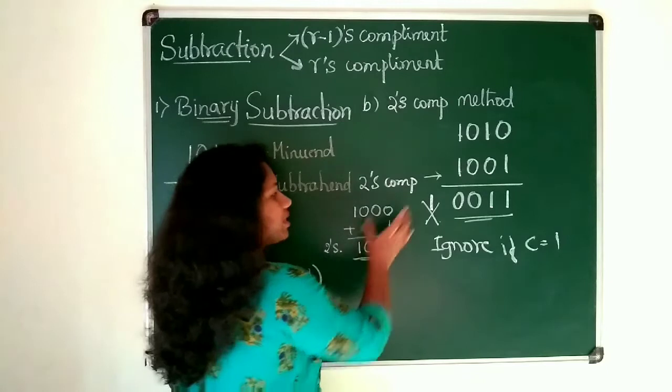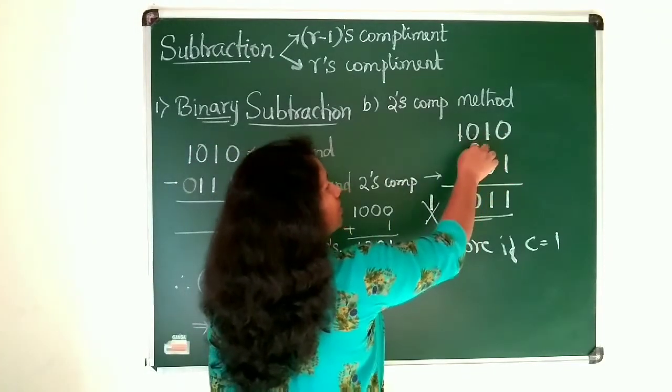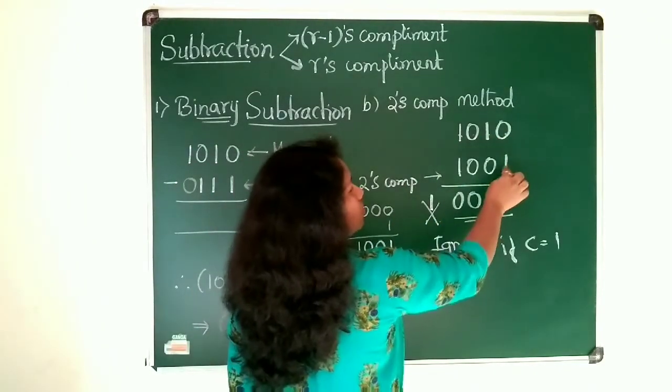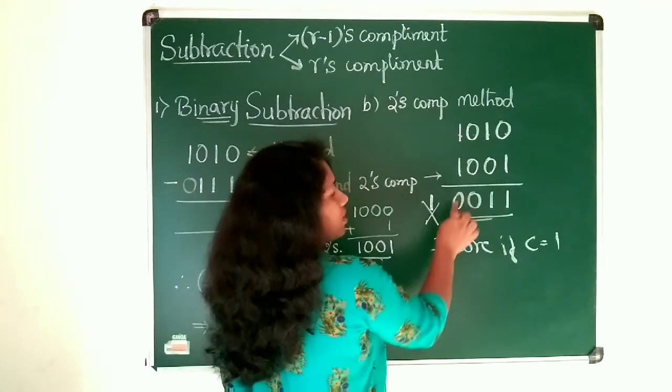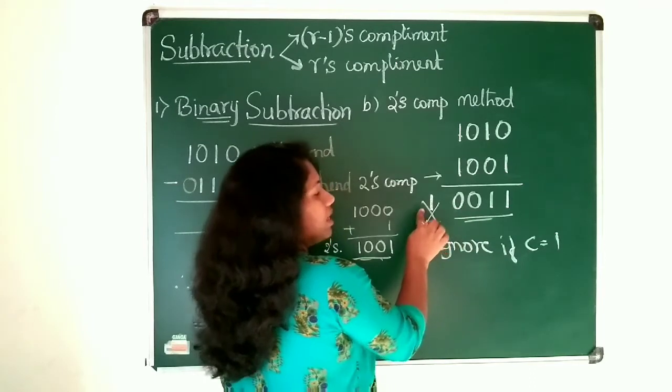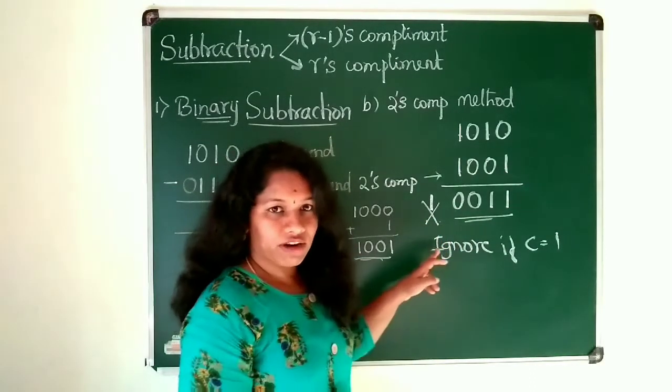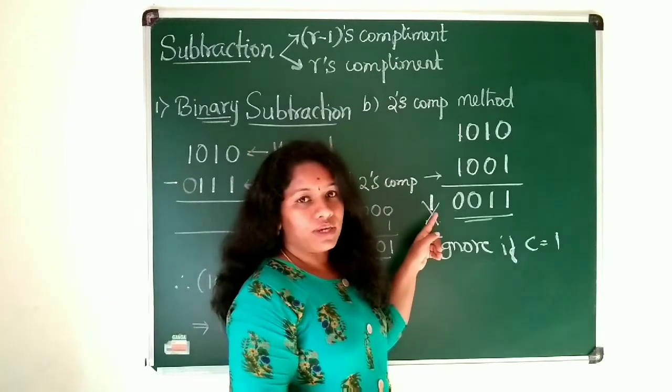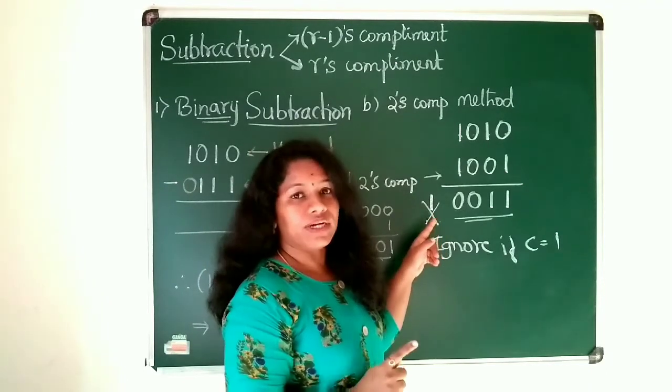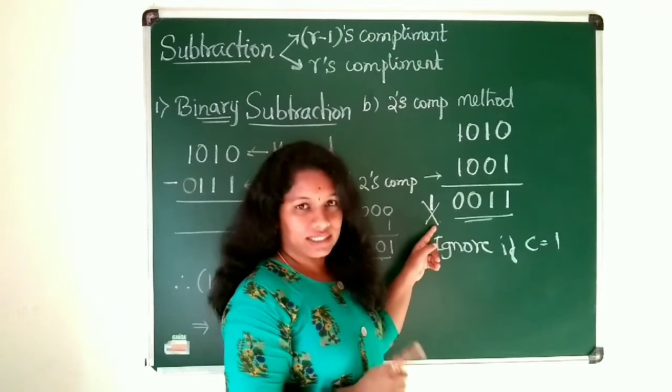Now I need to take this here and add with the minuend. So 0 plus 1 that is 1, 1 plus 0 is 1, 0 plus 0 is 0, 1 plus 1 is 0 sum and 1 carry. In case of 2's complement method of subtraction, you need to discard this carry. So if you are getting 1 carry, you need to ignore this or discard this.